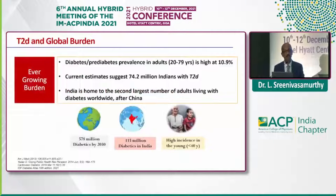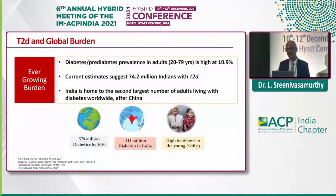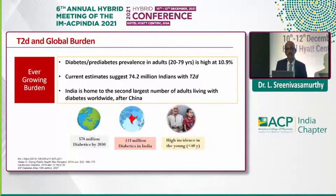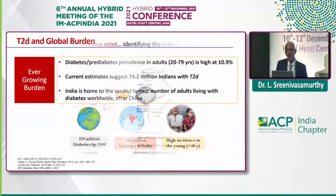We know diabetes prevalence in adults is as high as about 11%, and the current estimate is about 75 million Indians with diabetes — we are second to China.